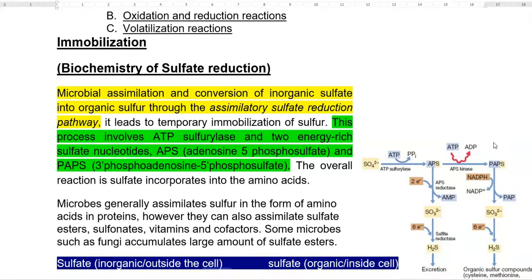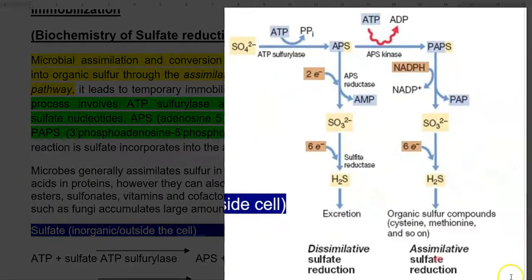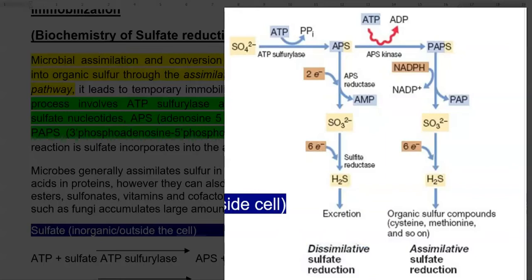This can also be regarded as the biochemistry of sulfate reduction. In nature, two types of sulfate reduction could be happening. One is assimilative sulfate reduction, which we are going to see in detail later. The other is dissimilative sulfate reduction. In assimilative reduction, sulfate is converted into intermediate compounds, and finally the sulfur is assimilated inside the cell through organic sulfur compounds such as cysteine and methionine.